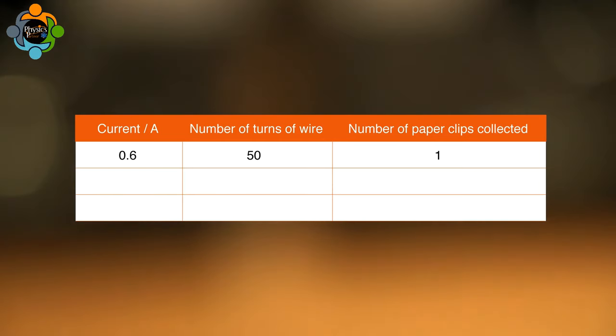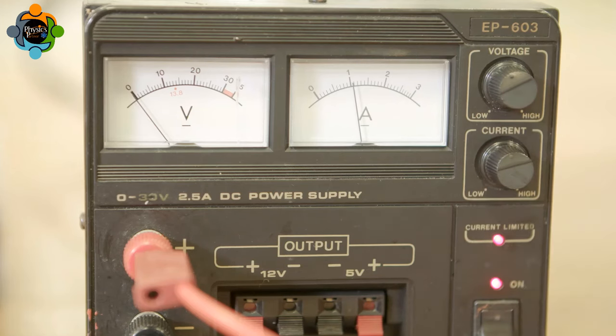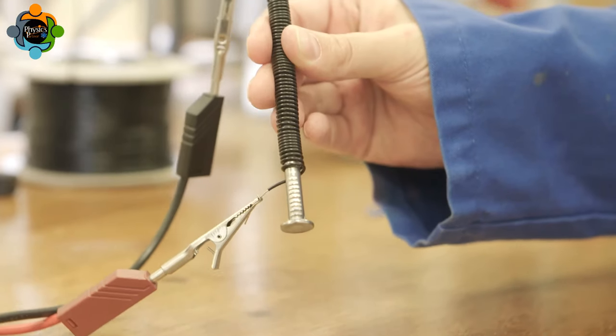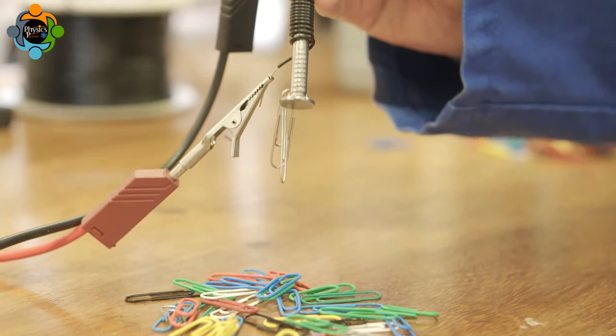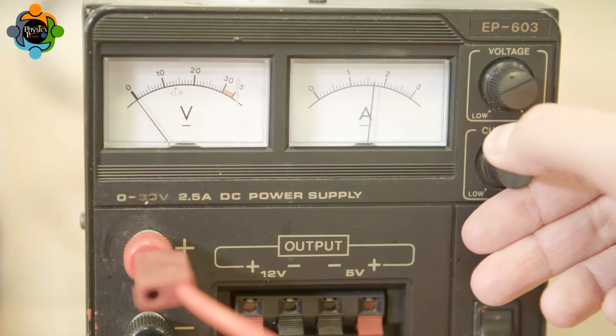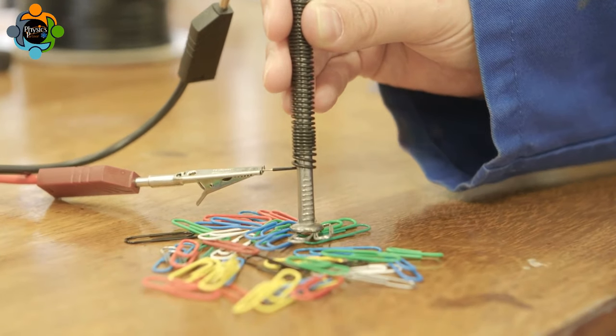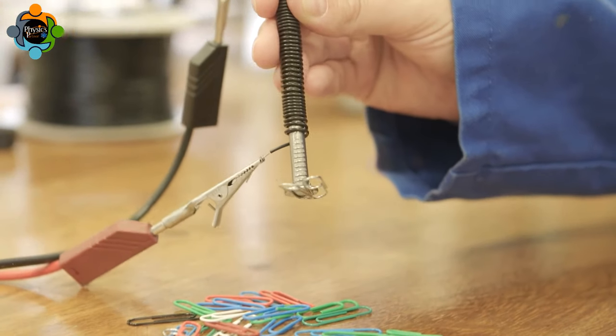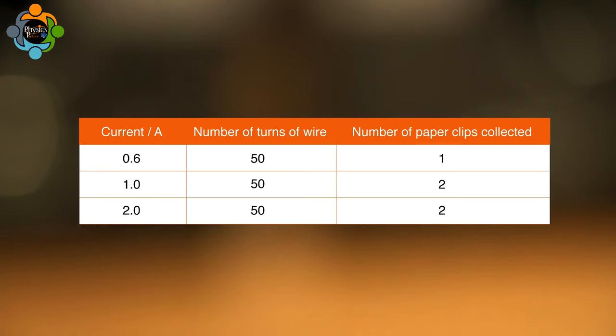The number of paper clips collected in the control is recorded in a table for comparison. The first variable being changed is the current, which has now increased. The number of paper clips collected using the increased current is counted and recorded. The current is increased again, and the final number of paper clips collected is counted and recorded. It is clear that as the current increases, the strength of the electromagnet increases.